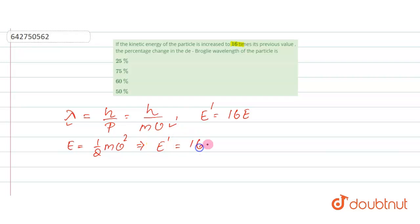E' which is 16 times E, I can simply write my E' as half of m v'², so this should be equal to 16 times half of mv². So which basically means my